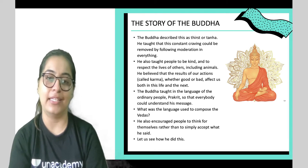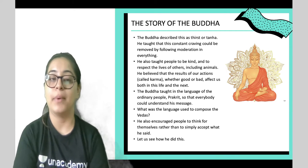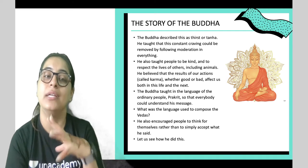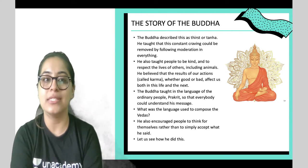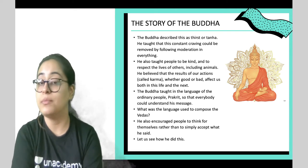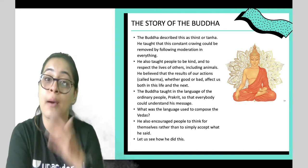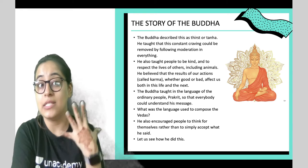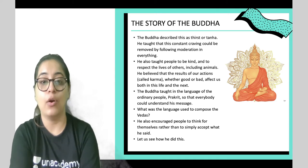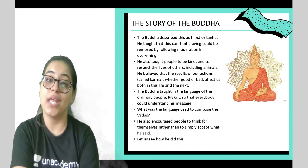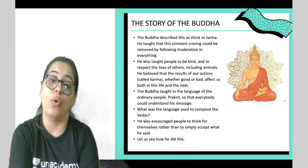The Buddha learned that this constant craving or Tanha could be removed by following moderation — making a balance in life. He taught that you should be kind, respect other people, and respect the lives of others including animals. He taught that whatever happens as a result of our actions, whether good or bad, will affect this life or the next life. The Buddha taught in the language of ordinary people, Prakrit, so that everybody could understand. He also encouraged people to think for themselves rather than simply accept what he said.